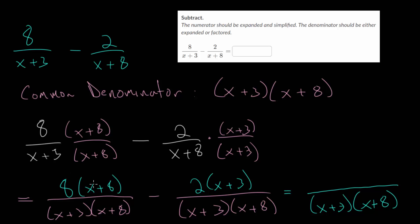So x plus 3 times x plus 8. And over here, let's distribute. You get 8x plus 64. And over here, you get minus 2x minus 6. Because remember, we're essentially distributing this negative to each of these. So it's really like minus 2 times x and minus 2 times 3.